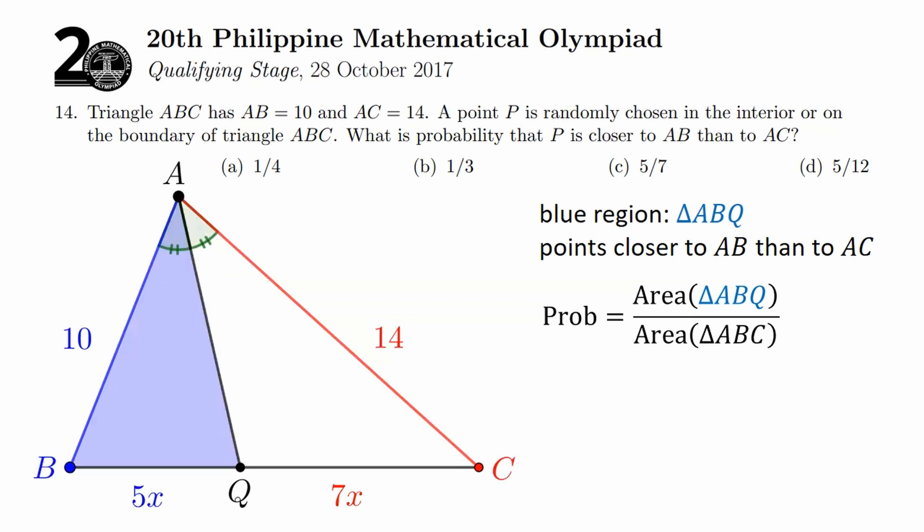So, therefore, we can represent BQ as 5X and CQ as 7X. And so, now we can write something for the areas of the two triangles that appear in our probability. For triangle ABQ, so you have one half, and then for base, let's use 5X. And then the height, let's use H. And incidentally, this is also going to be the same height that we can use for triangle ABC's area.